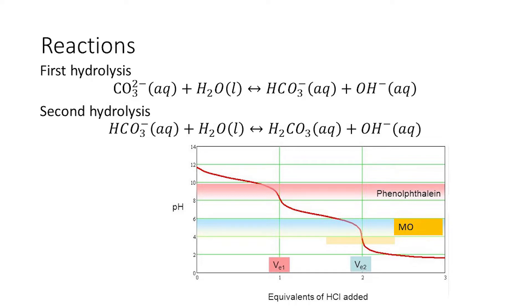The titration is between sodium carbonate and HCl. When you place sodium carbonate in aqueous medium, it ionizes into sodium ions and carbonate ions. Carbonate ions in the aqueous medium hydrolyze, forming bicarbonate ions and OH minus. So the sodium carbonate solution is basic.